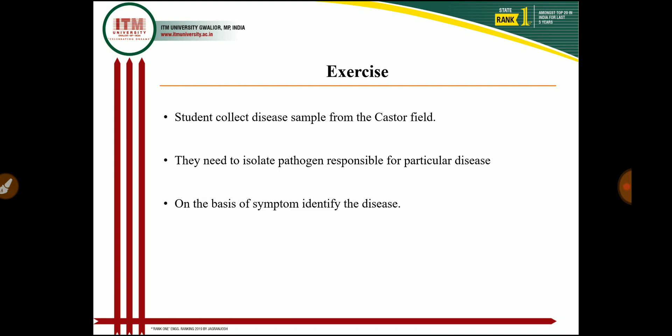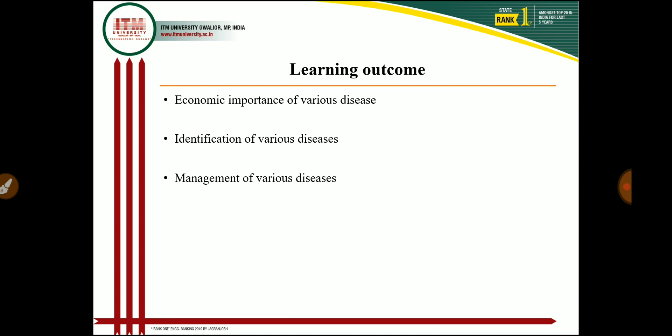The learning outcomes of today's lecture: I explained four diseases of the castor crop, and in each disease I covered the causal organism, pathogen characteristics, symptoms, economic importance, how the pathogen completes its disease cycle in the host, and how we control the diseases in the field condition.